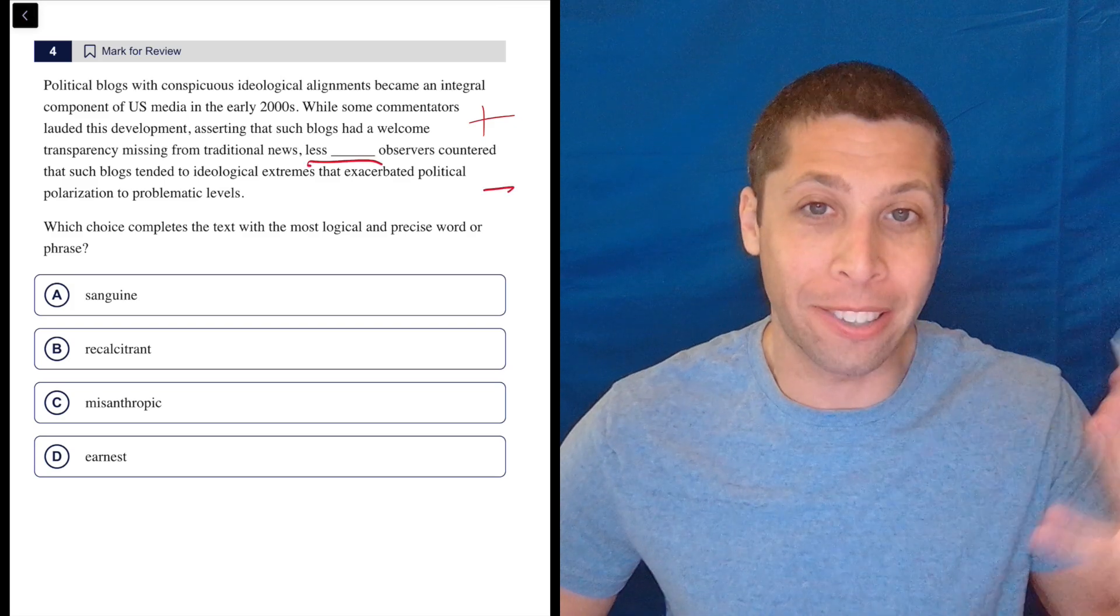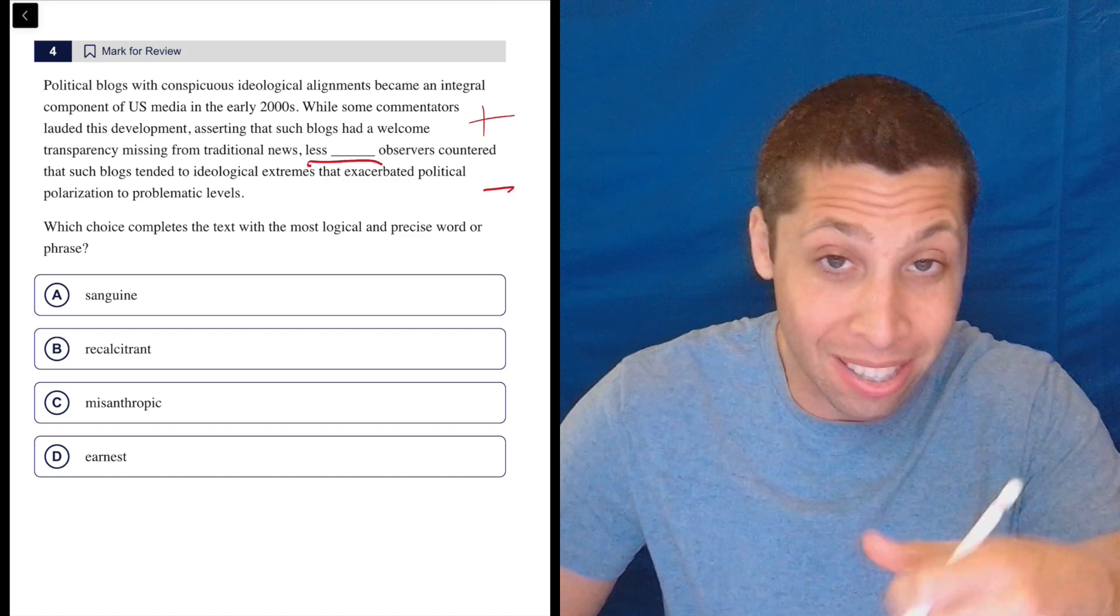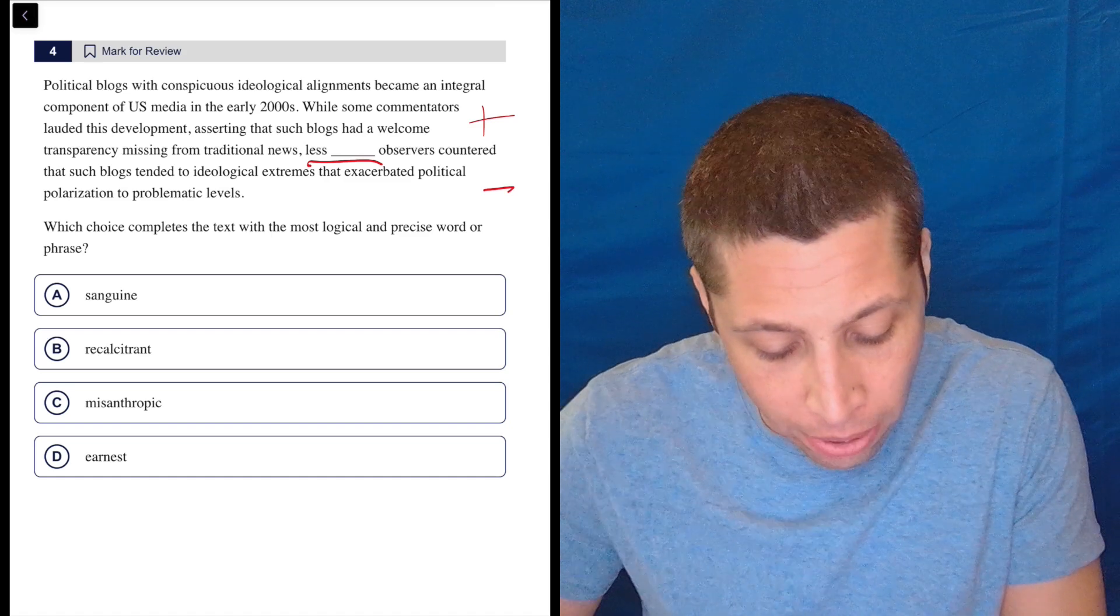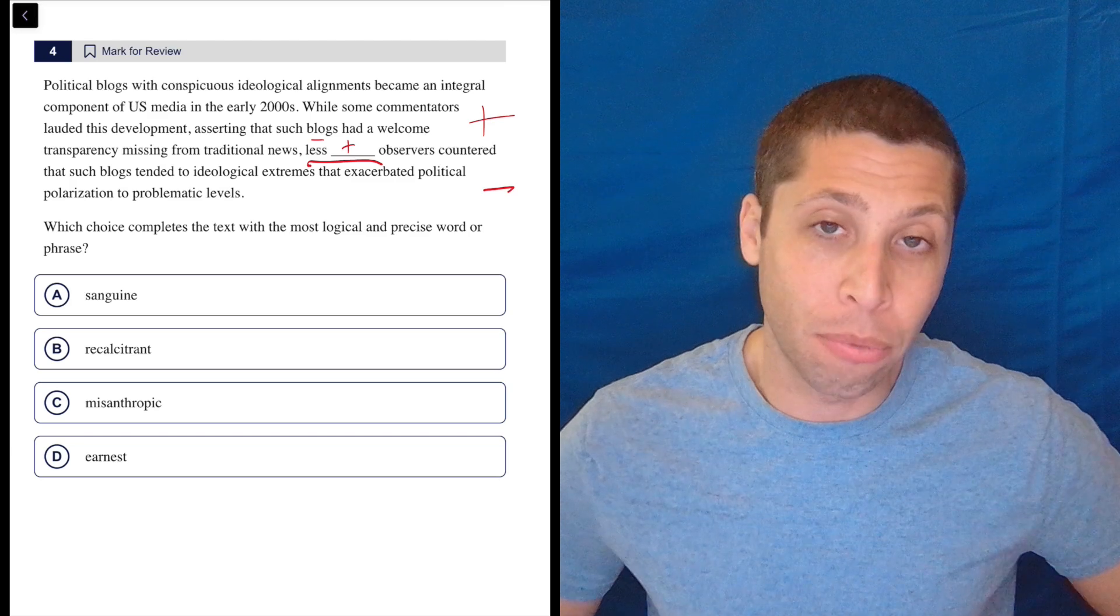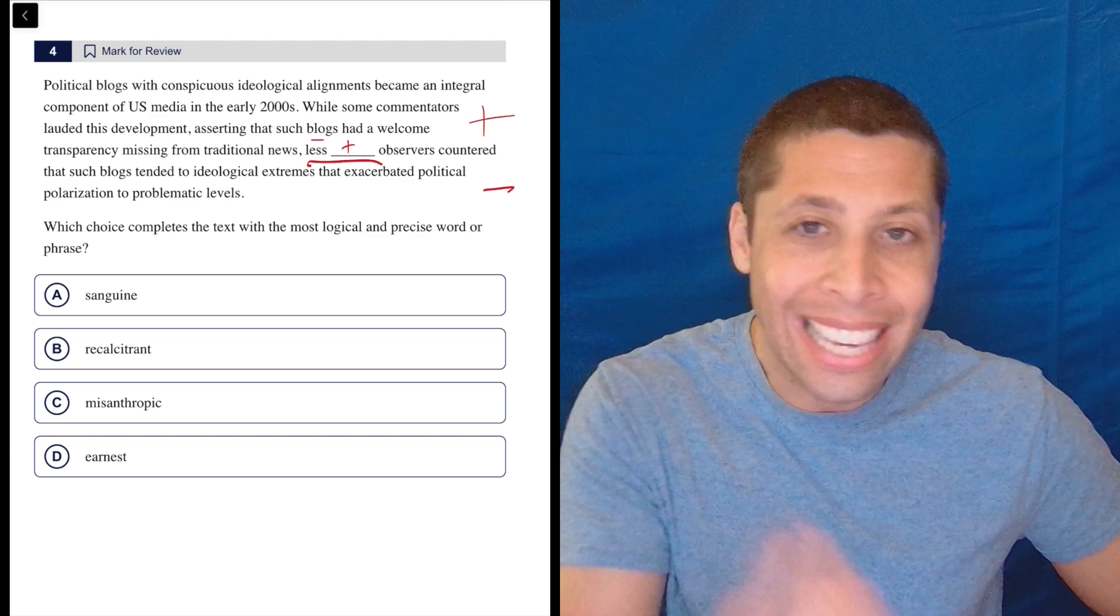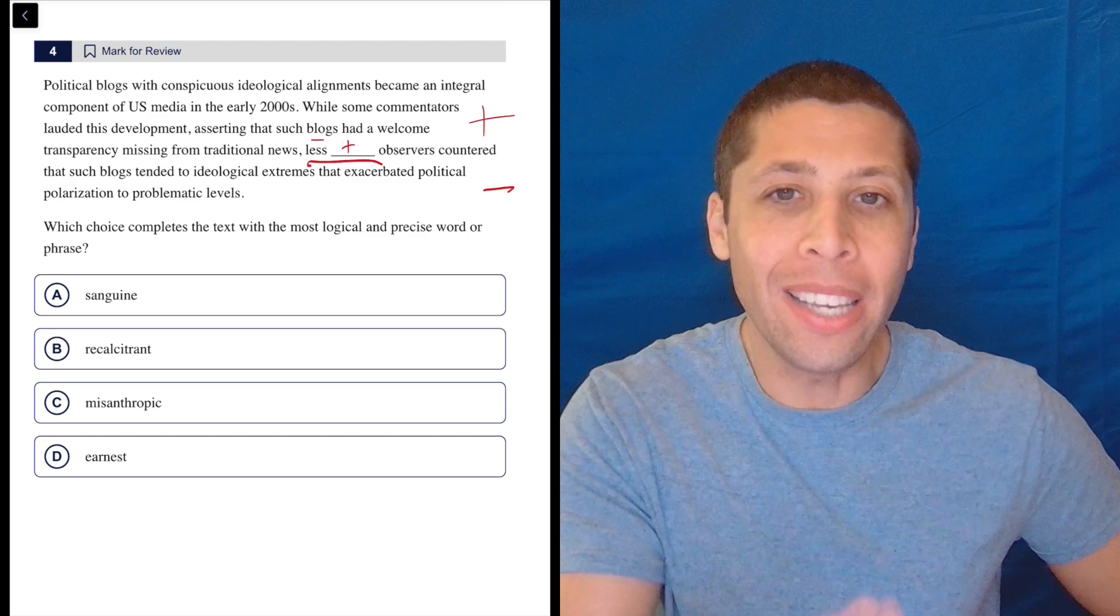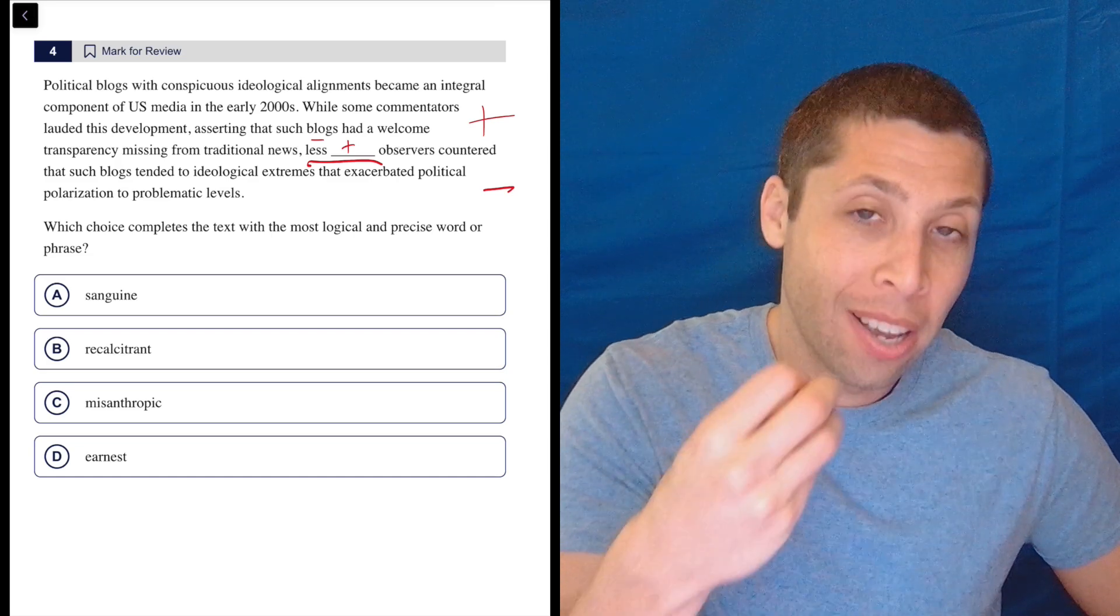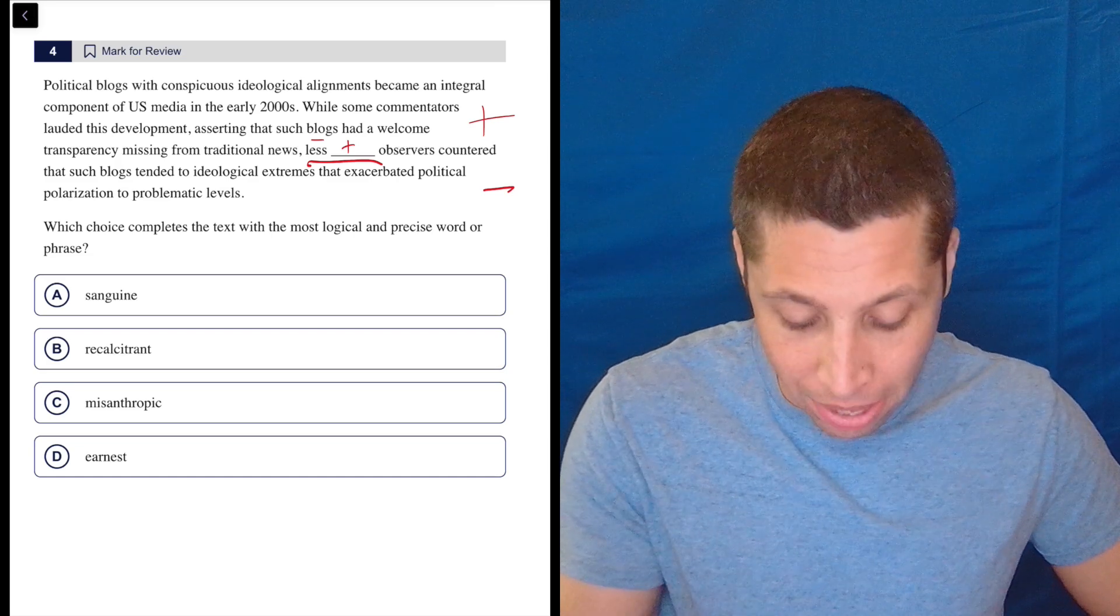They're twisting it up to even confuse this further. But if we can see that twist, it's pretty obvious. If we want to say something negative here, we need the blank to be a positive word because the word less before it is negating that positive. So we need to have a positive word, even though that extra clause is negative. So what's a positive word here?